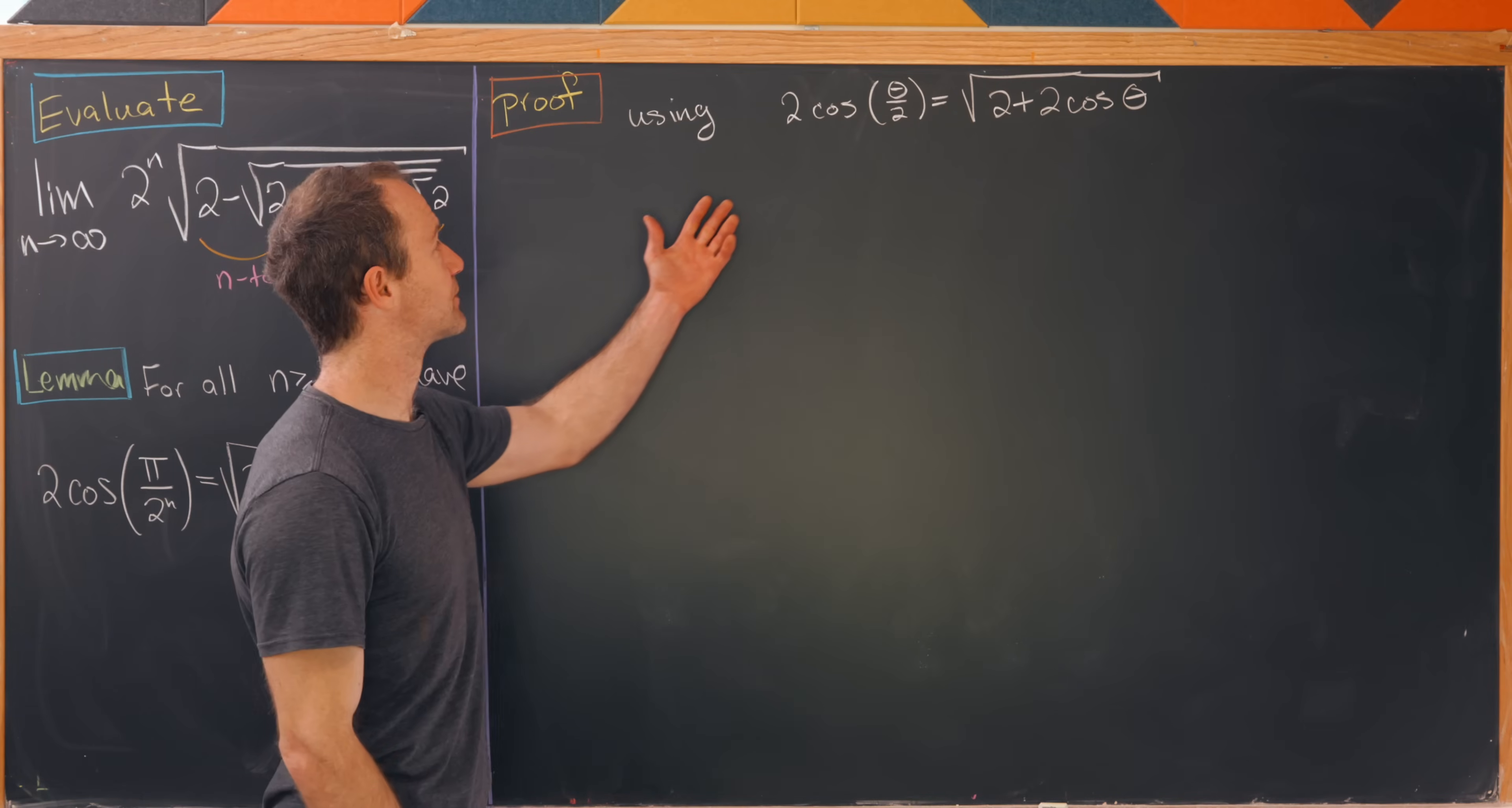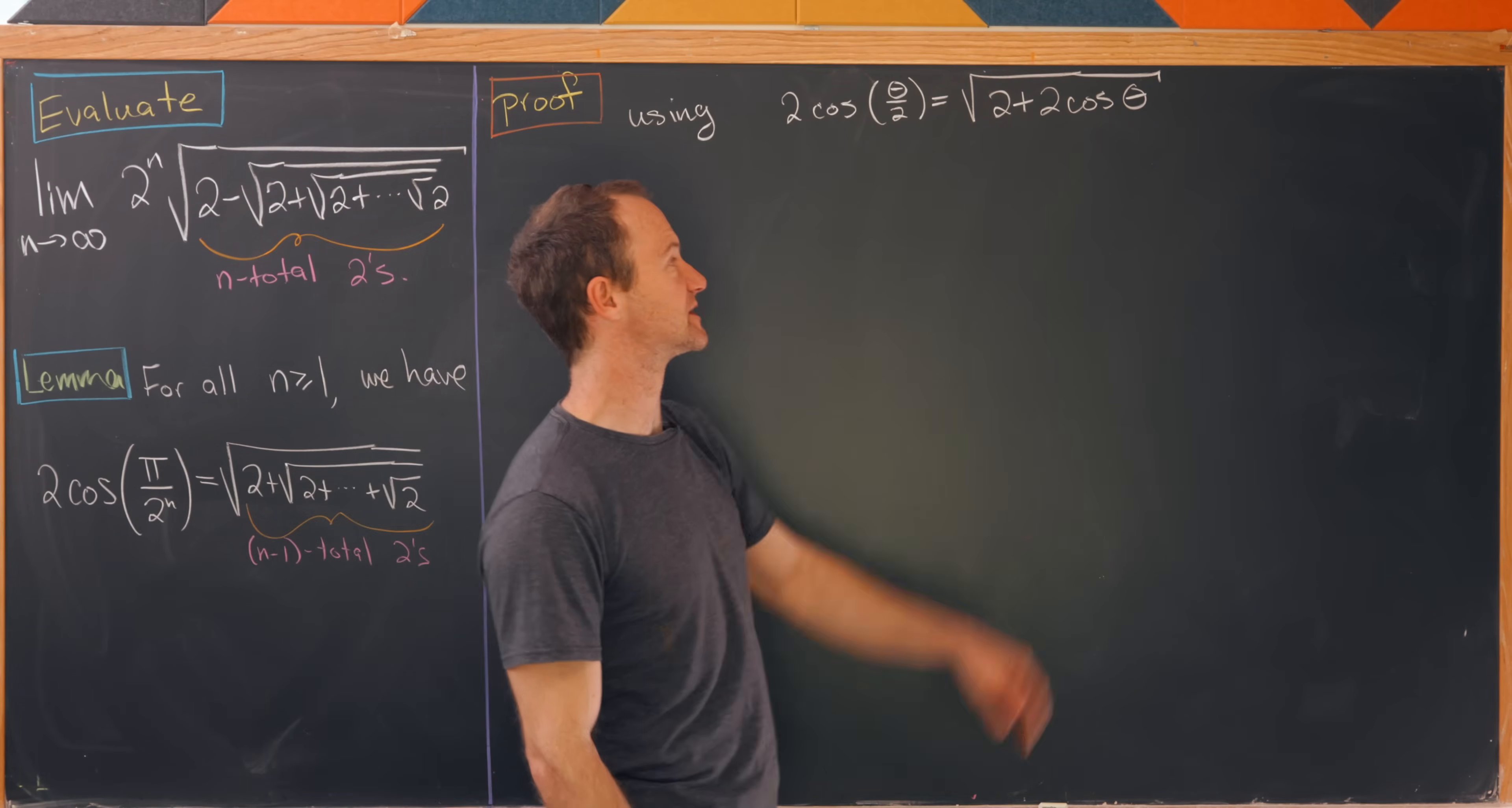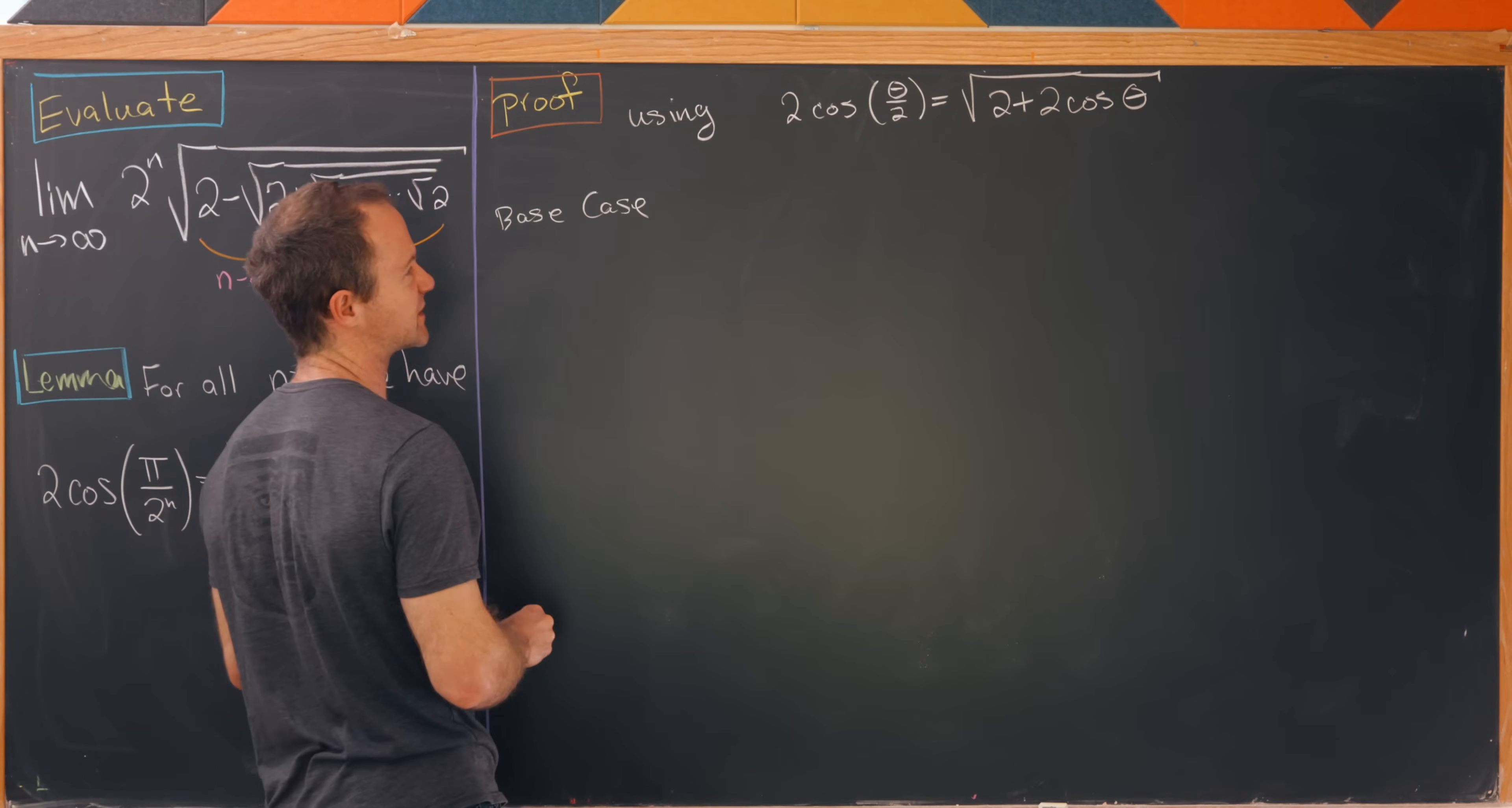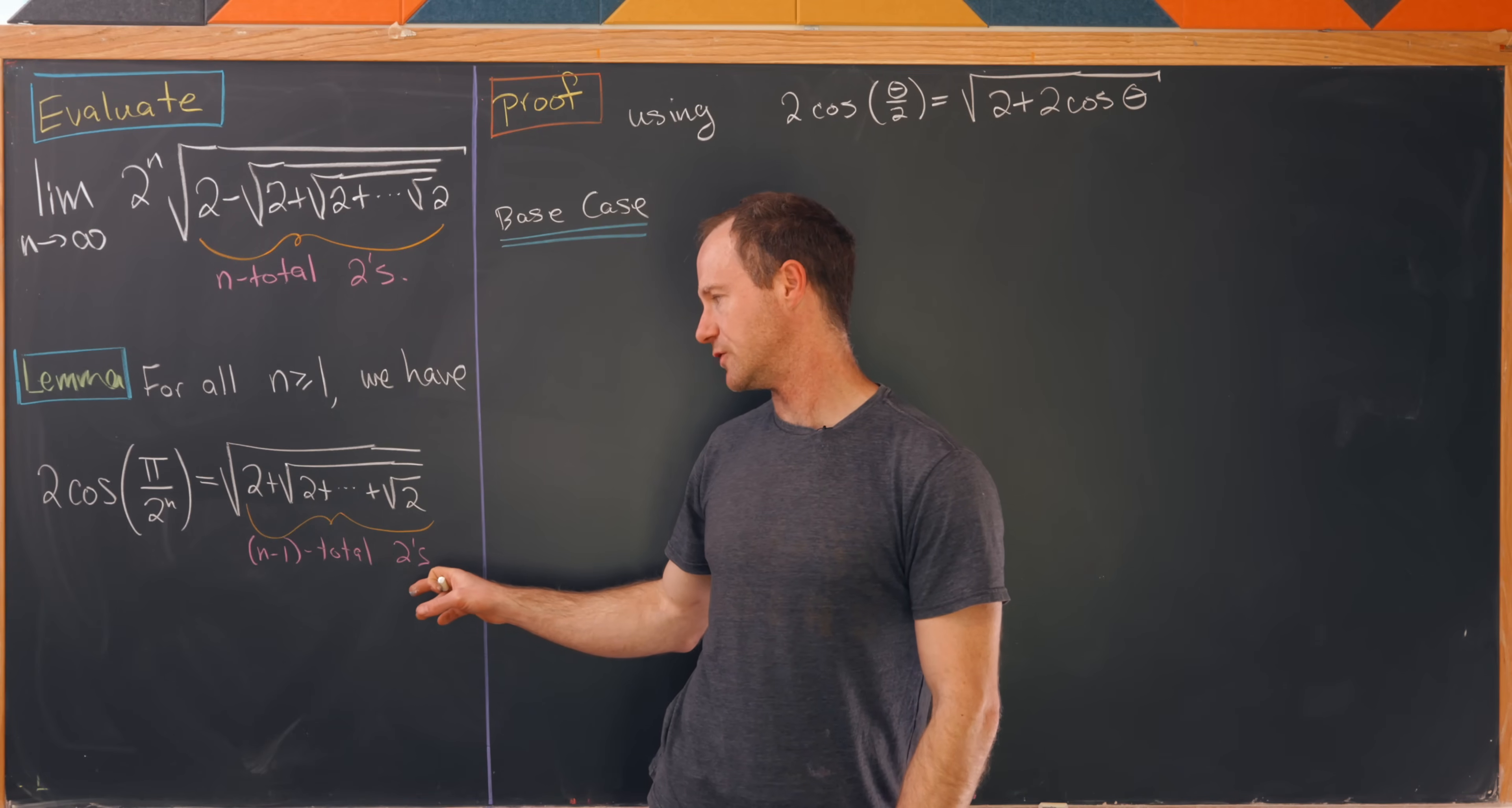In order to prove this we're going to use the half angle formula for cosine: 2 times cosine of theta over 2 equals the square root of 2 plus 2 cosine theta. Now we'll use induction. Anytime you're doing an inductive proof you need to start with a base case, generally the smallest possible value of n.